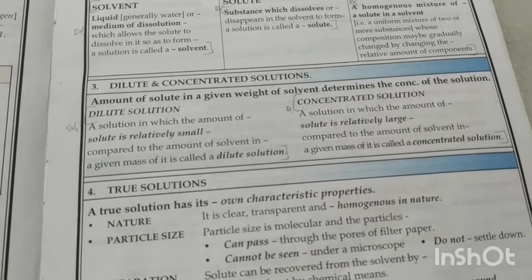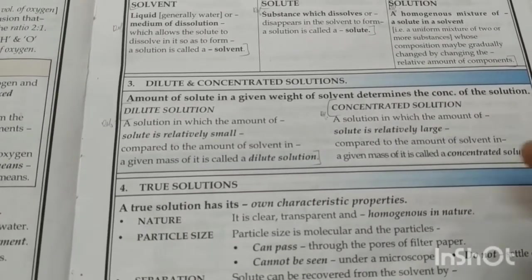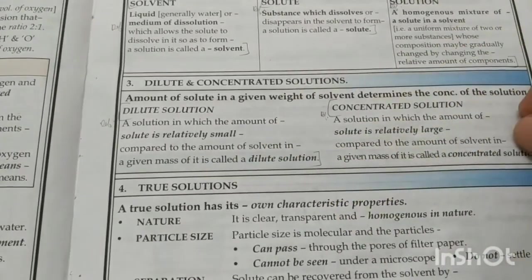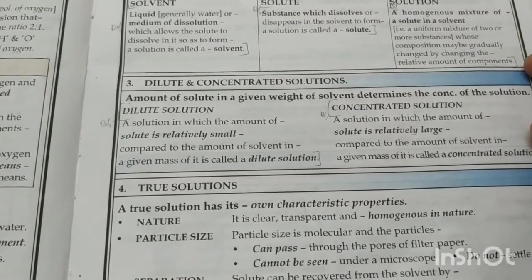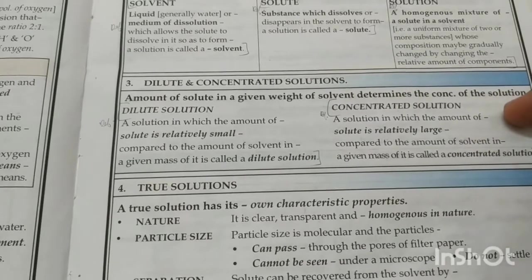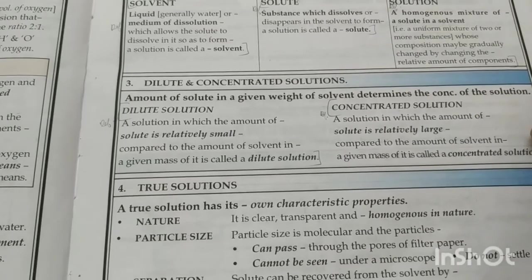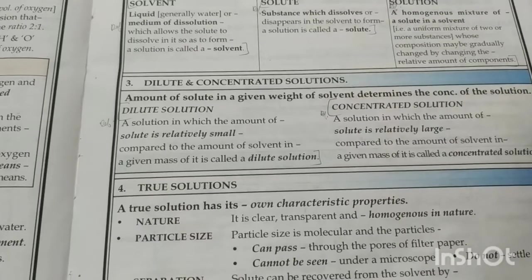If the solute is relatively small in quantity, it is called a dilute solution — for example, a glass of water with just a pinch of salt. A concentrated solution on the other hand has a large amount of solute comparatively; for example, a glass of water with 12 spoons of salt dissolved in it will be very concentrated.